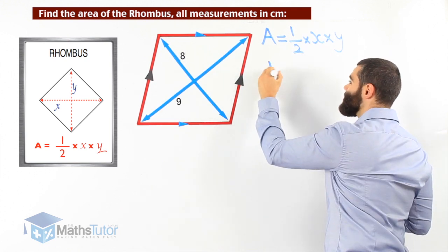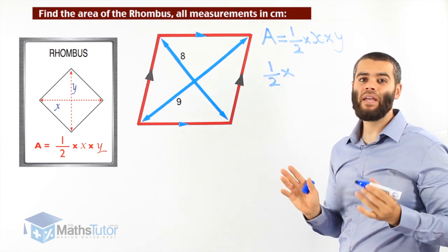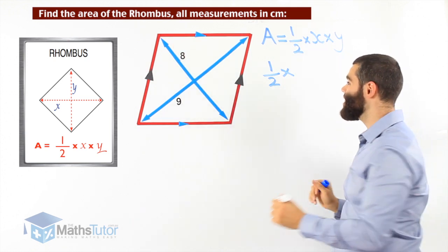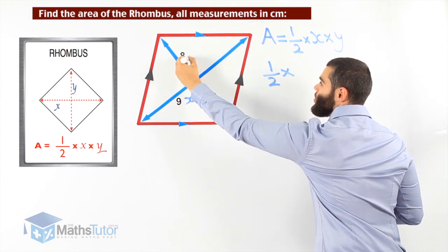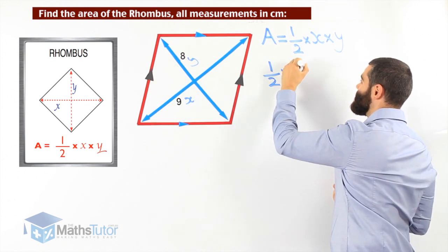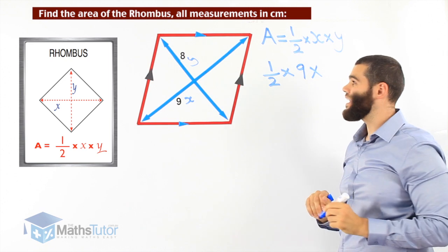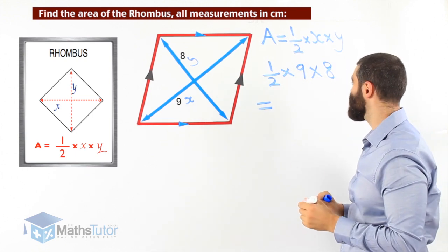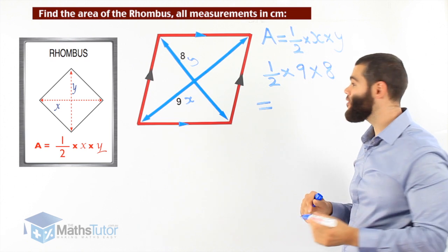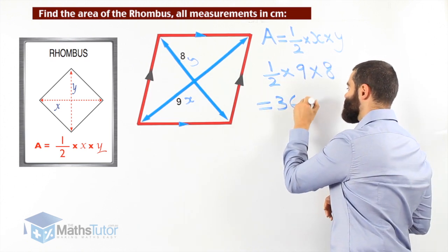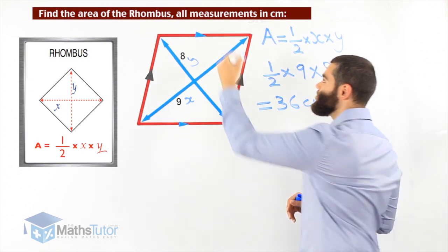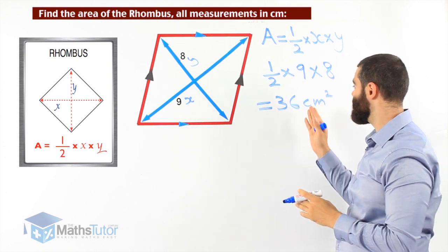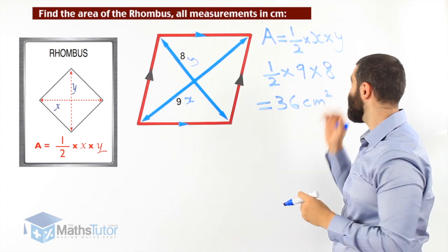Half times x and y — it can be either diagonal assigned as x or y, it doesn't really matter. We'll call this one x and this one y. Half times x — x is nine — and y is eight. You can grab your calculator. Half times nine times eight: nine times eight is 72, and half of that is 36 square centimetres. So the area — everything inside the rhombus — is 36 square centimetres. We used the formula half times x times y.